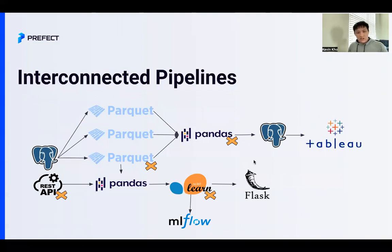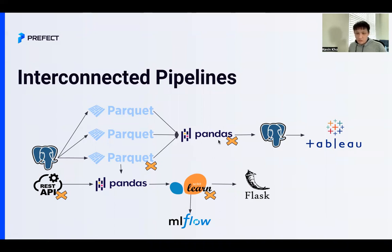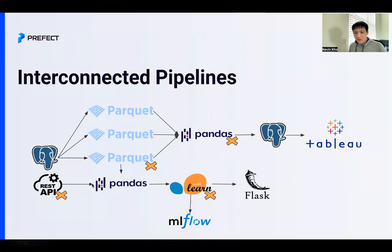As we look at more interconnected pipelines, there are more places that things can fail because there's a lot more activity going on. Here we have two interconnected pipelines — maybe one is our machine learning pipeline, but some of the data is shared by a BI pipeline where Postgres writes out some parquet, a Pandas step combines and processes the data, then writes it out to another table so that Tableau can visualize it. If we put this on a schedule, there are a lot more failure points because of this interconnected pipeline. With workflow orchestration, we want to handle it so that if one step fails, we can still run another, or if a step fails, we have some failure mechanism to deal with it.